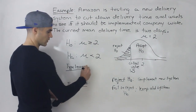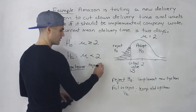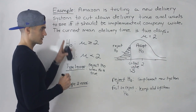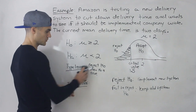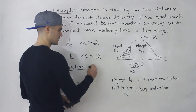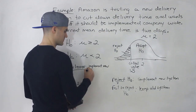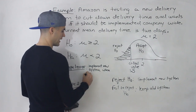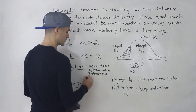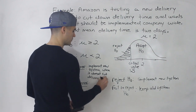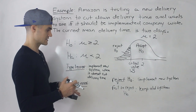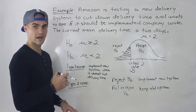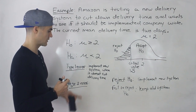One more thing — let's describe what a type 1 error and a type 2 error would be in this scenario. Type 1 error is when we reject the null when the null is true. So for this scenario, we reject the null when it's true, meaning we implement the new system when in reality it doesn't actually cut down delivery time. Maybe there was some kind of bias in the sample or not enough of a sample — that would be a type 1 error.